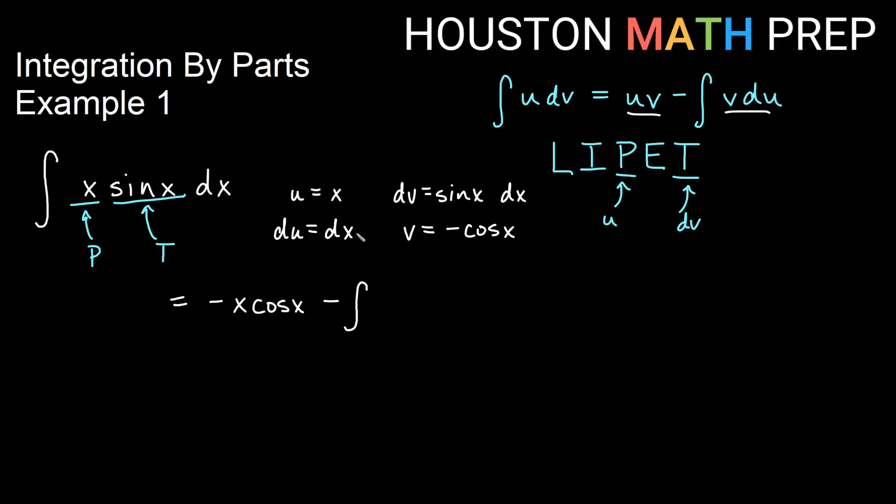So minus, notice v du is negative, so minus a negative, I would go ahead and say plus there, and we would have cos x dx. Again, bumping the negative out from v du, joining with the minus to make this a plus.